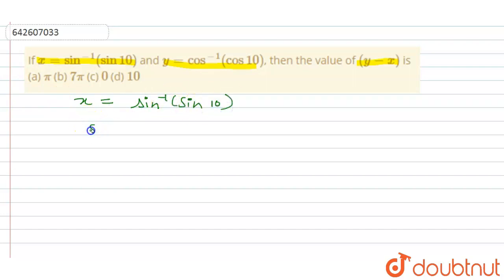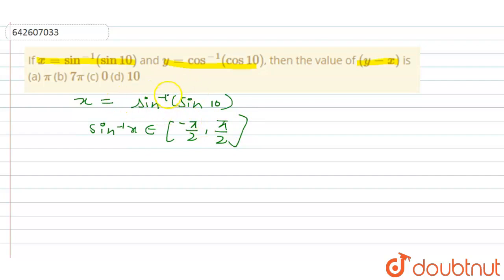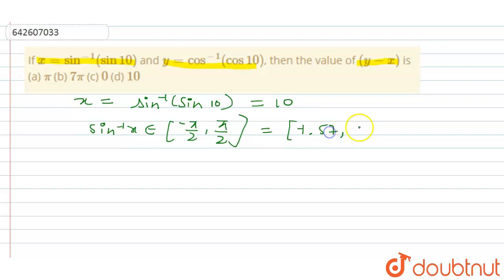We first start with the given that x is sin inverse sin 10. We will first look at what is the range of sin inverse x. The range of sin inverse x belongs to minus pi by 2 to pi by 2. If we cancel sin inverse by sin we obtain 10, but this 10 doesn't belong to our range minus pi by 2 to pi by 2, because this is approximately minus 1.57 to 1.57.